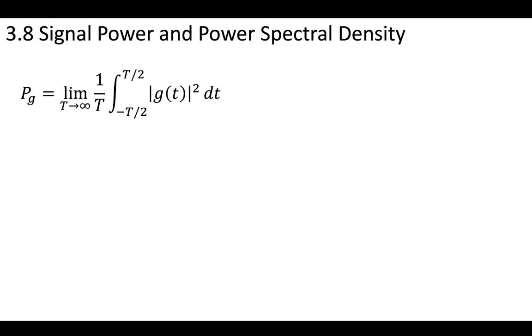So let's consider signal power, and we'll define the signal power of a signal g as being equal to this integral. So the signal power of some signal g, we're going to take the square of that signal, and we're going to integrate from some period, across some period, minus t half to t half.